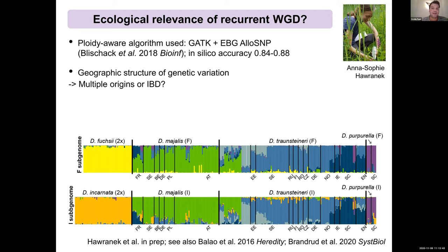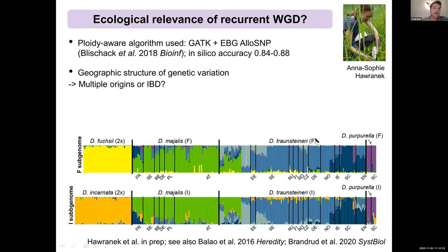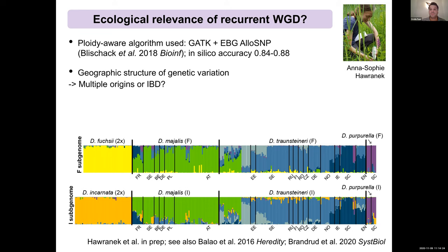Using EBG with a ploidy-aware approach, she could separate the subgenomes of each polyploid based on reference allele frequencies in the two diploid parents. We tested in silico the accuracy of separating the subgenomes, achieving roughly 85% accuracy. In the results, we observe a consistent geographic structure of genetic variation — in particular Traunsteineri, which has a wide distribution in Europe following previously glaciated areas of Britain, northern Scandinavia, and the Alps.